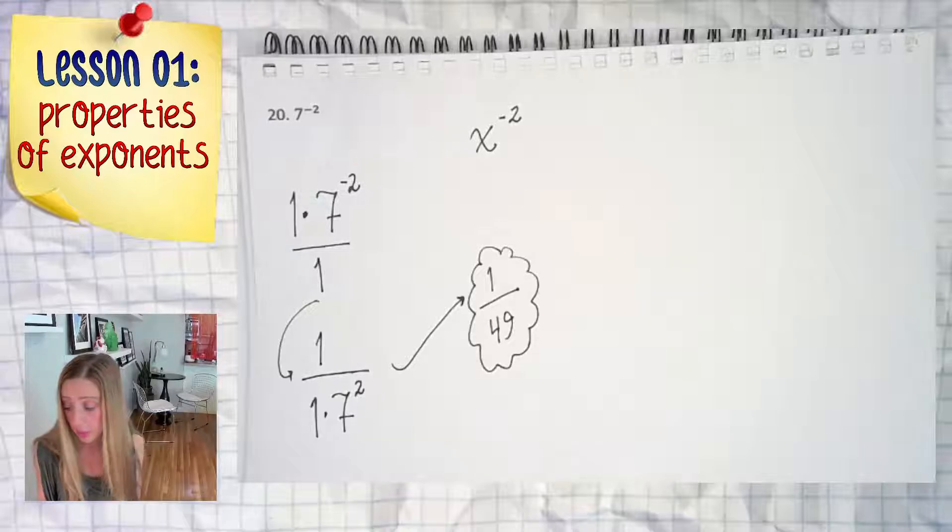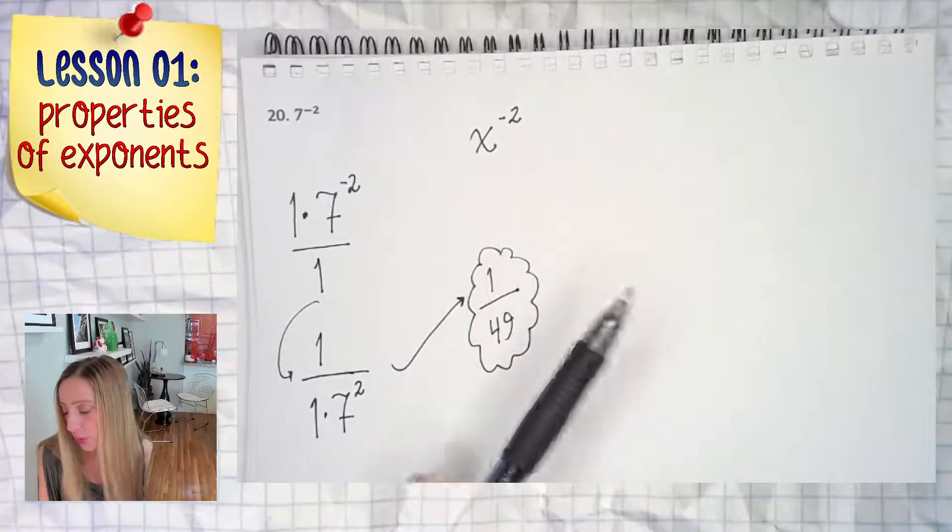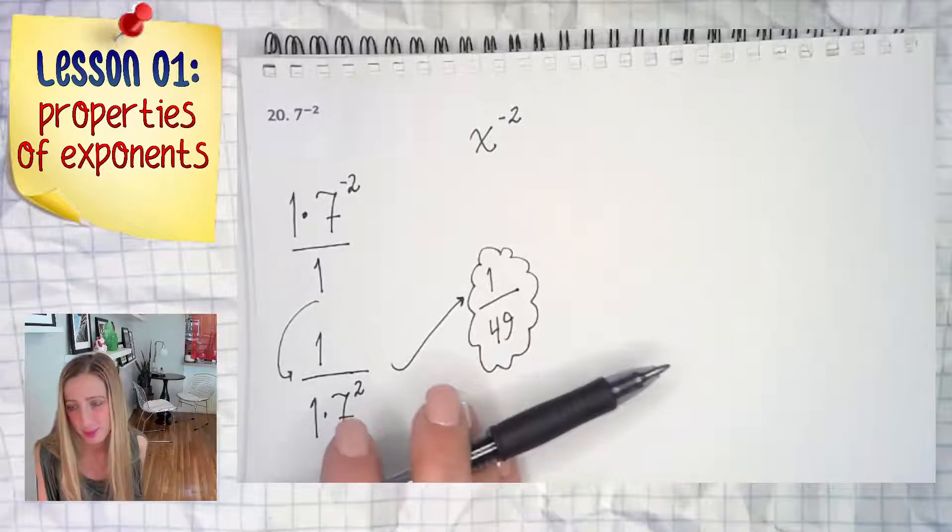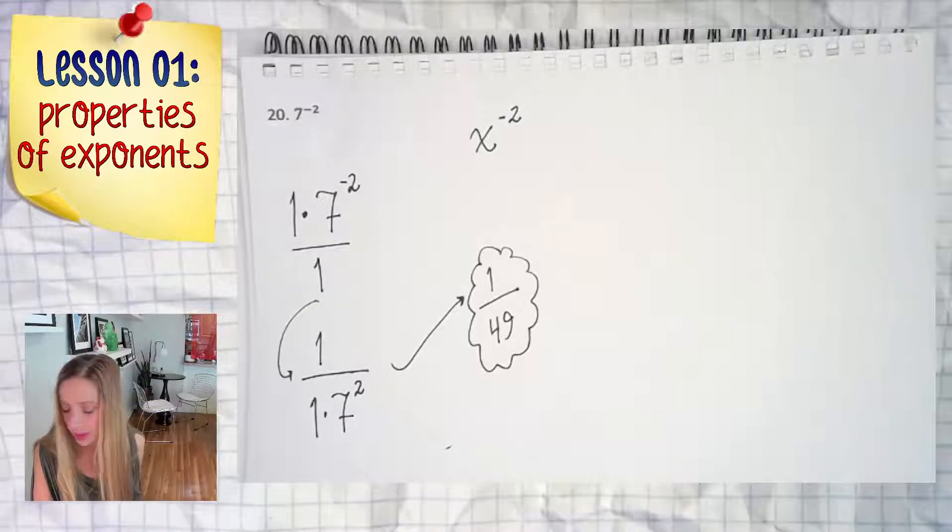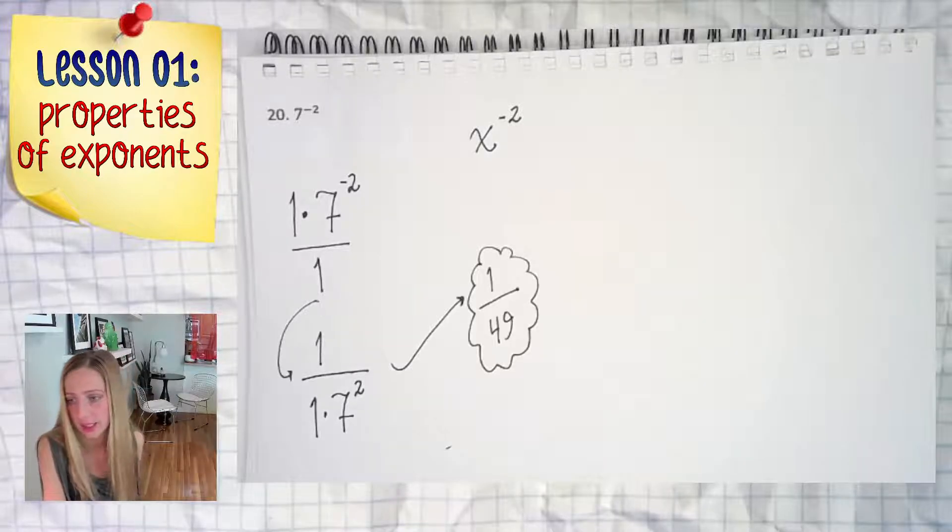But seven squared, give me a break, square it. It's one over 49. All right, hope you got that right answer. To watch number 21, definitely click over here. To go to the playlist, click over here. And I hope that you are doing well with these examples. See ya later.